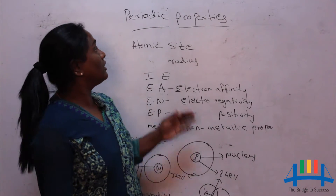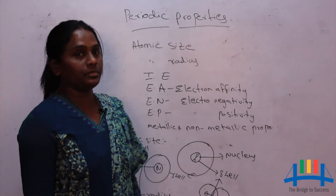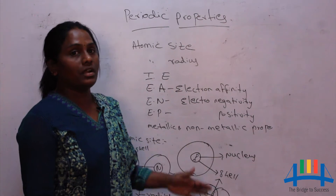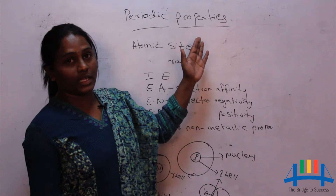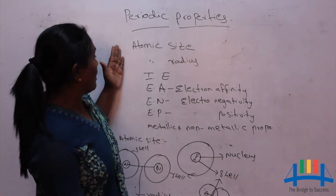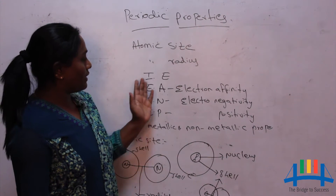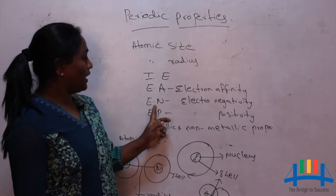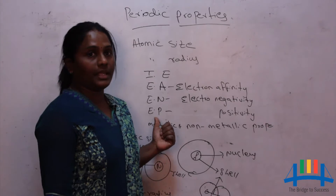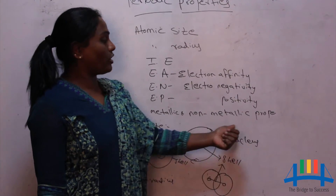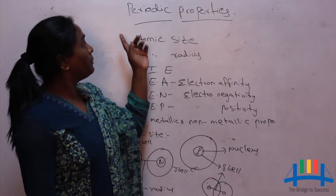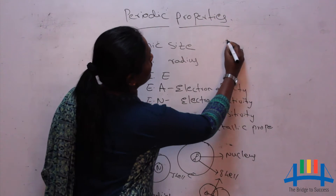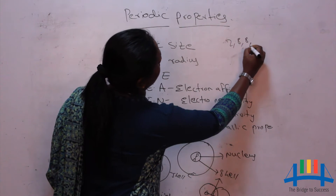Hello everyone. Today we are going to learn about periodic properties. Periodic properties means the properties which repeat at regular intervals of time. So many properties are there — for example, atomic size, atomic radius, ionization energy, electron affinity (Ea), electronegativity (En), electropositivity (Ep), and metallic and non-metallic properties. All these are called periodic properties which repeat at regular intervals of period like 2, 8, 8, 18, etc.